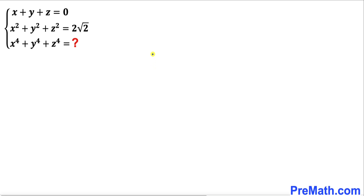Welcome to pre-math. In this video we have got this system of equations: x plus y plus z equals 0, x squared plus y squared plus z squared equals 2 times square root of 2, and now we are going to find the value of x to the power 4 plus y to the power 4 plus z to the power 4.